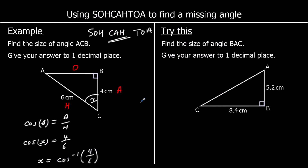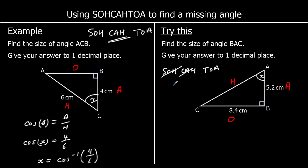One for you to try: find the size of angle BAC. First step: label the triangle. The hypotenuse is the longest side; opposite the angle is called the opposite; and in between the angle and the right angle is called the adjacent. Is it SOH, KA, or TOA? Which two lengths have we got? We've got O and A — we haven't got H. That means it's tan, it's TOA. TOA means tan theta equals O over A.